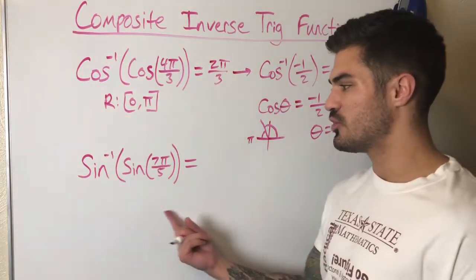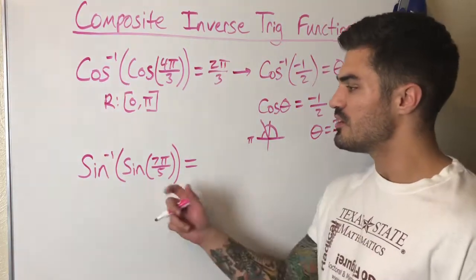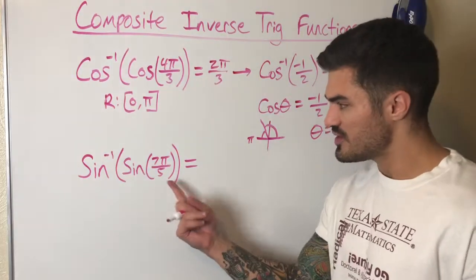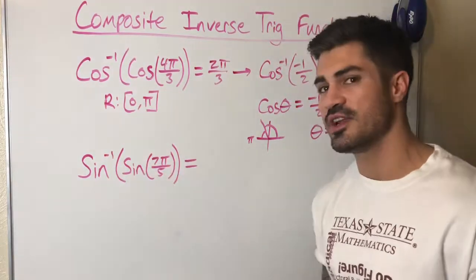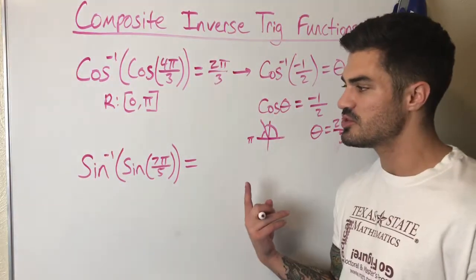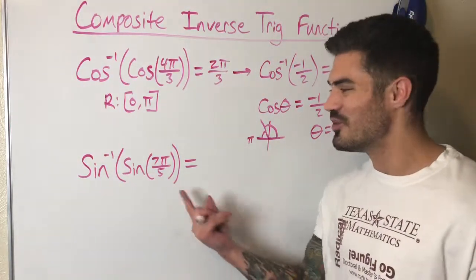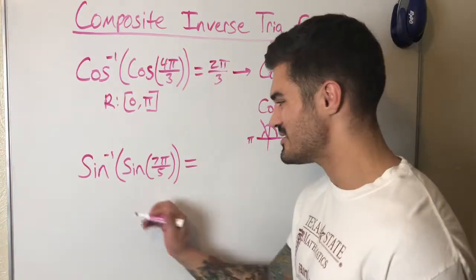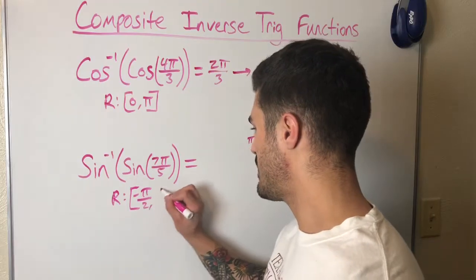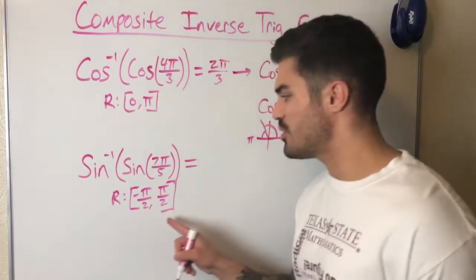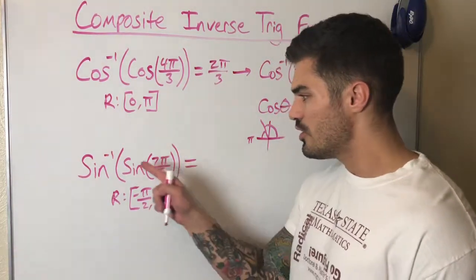Now let's look at the next example. Our inner function is sine of 7π/5 and the outer function is sine inverse. The first step is always to check if the angle is within the range of the outer inverse function. The range of sine inverse is from negative π/2 to π/2. Since 7π/5 is clearly bigger than π/2, it is not within the range.